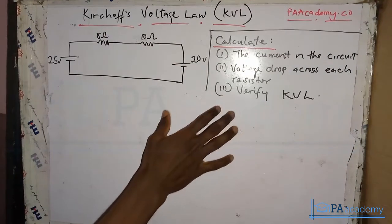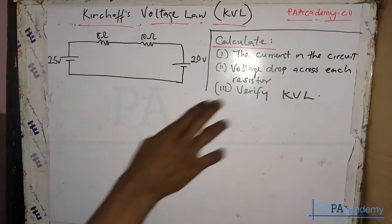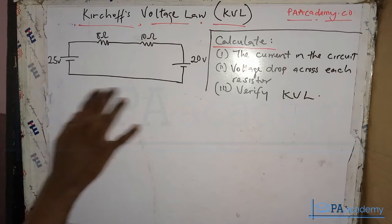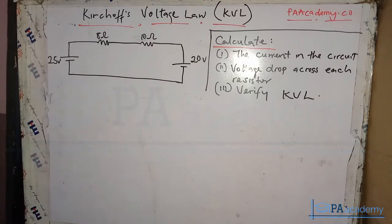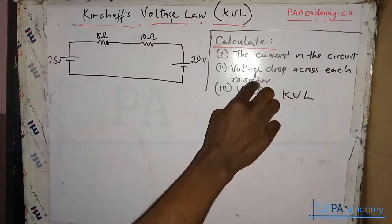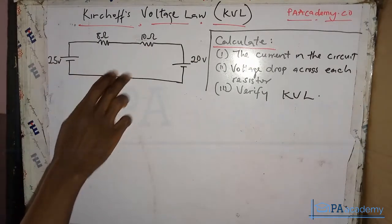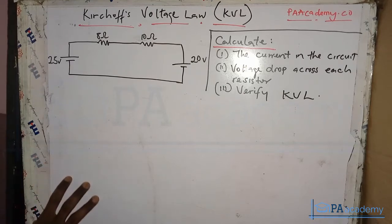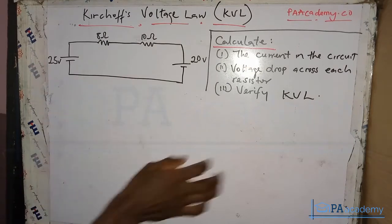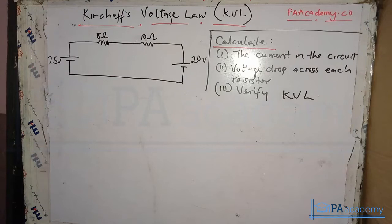In this circuit we are given three questions. The first one says calculate the current in the circuit using Kirchhoff's Voltage Law. The second question asks us to calculate the voltage drop across each resistor — across the 8 ohm resistor and the 10 ohm resistor. The third one asks us to verify Kirchhoff's Voltage Law. Remember, KVL states that the algebraic sum of all voltages around any closed loop in a circuit equals zero. We are going to verify that statement with respect to this particular circuit.